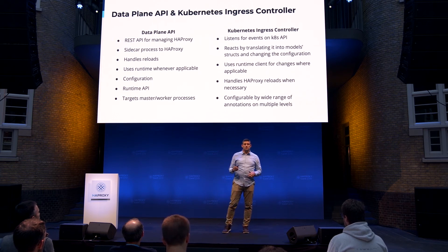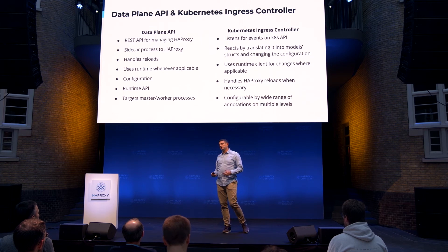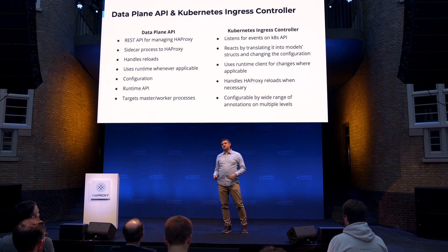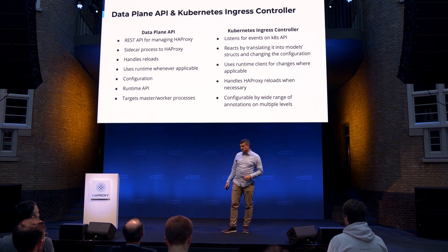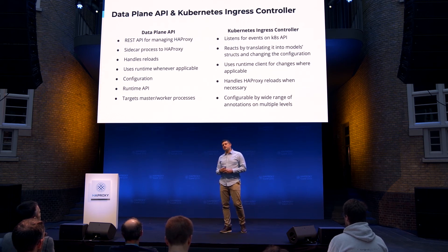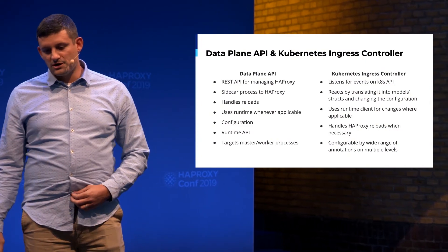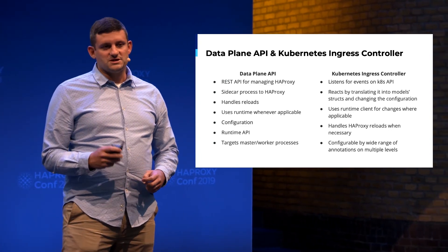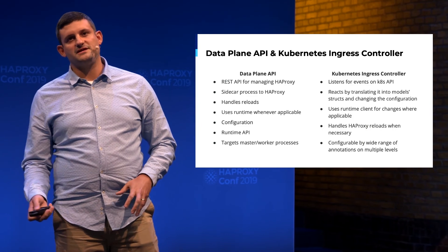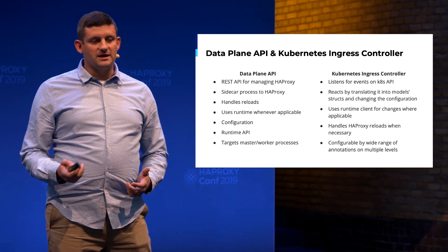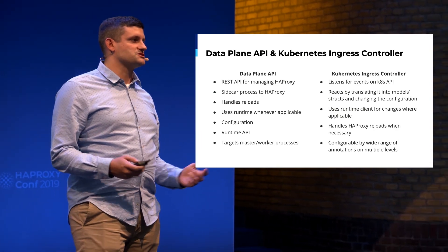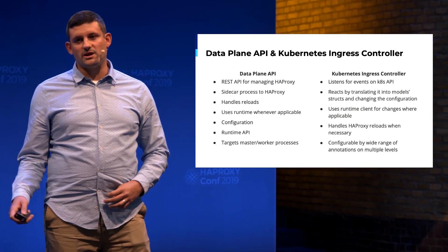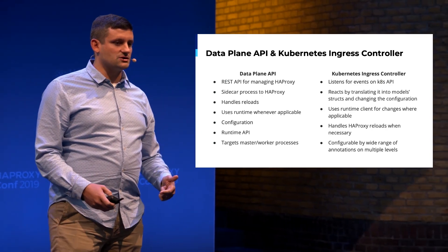The Kubernetes Ingress Controller is our implementation that listens for events on the Kubernetes API and reacts by translating them into model structs and using client native to change configuration. Like the Data Plane API, it avoids reloads as much as possible using the Runtime API. You can configure the Kubernetes Ingress Controller at multiple levels: the Service objects, the Ingress object, and the ConfigMap.